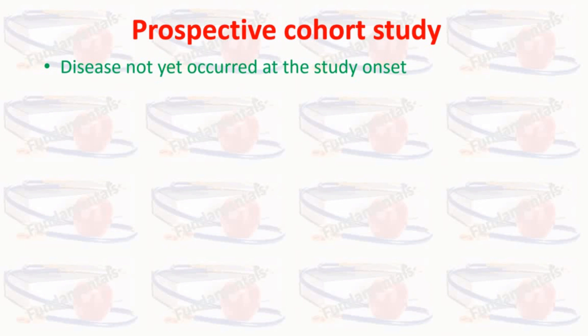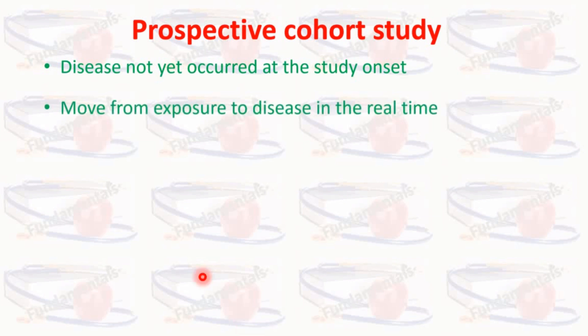In prospective cohort study, the investigators conceive and design the study, recruit subjects, and collect baseline exposure data from all subjects before any of the subjects have developed an outcome of interest. The outcome of interest is the disease, so the researcher moves from exposure to disease in real time. The subjects are then followed into the future in order to record the development of an outcome of interest.